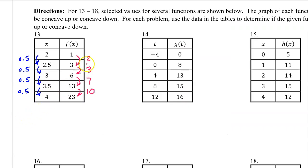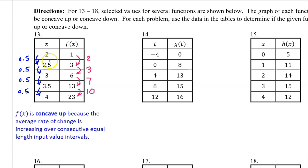For number 13, here are the output value changes and the input value changes. Because we have consecutive equal length input value intervals, we don't have to find the average rate of change to see that it is increasing. Therefore, f of x is concave up. F of x is concave up because the average rate of change is increasing over consecutive equal length input value intervals.